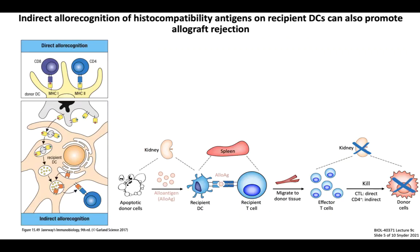Allograft rejection can also occur through indirect allorecognition. Unlike direct allorecognition, which is mediated by donor APCs activating recipient T cells, indirect allorecognition occurs when recipient DCs cross-present histocompatibility antigens derived from apoptotic donor cells. Recipient DCs phagocytose donor antigens including HLA or MHC molecules as well as minor histocompatibility antigens, then present those peptides to alloreactive T cell clones. Priming occurs in the spleen, and effector T cells traffic to the grafted tissue to destroy it. Both direct and indirect allorecognition lead to the same outcome: allograft rejection.